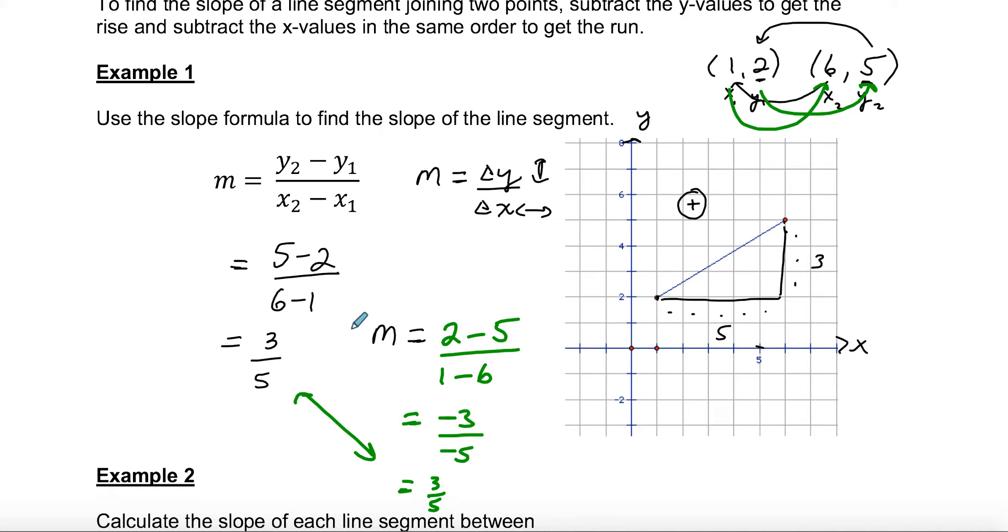As long as what you're doing, you go in the same direction. If you did 5 minus 2, and you were going from this point to this point, and then you messed up, and you went from the first point to the second point and did 1 minus 6, that's going to be a problem. You're not going to get the same answer. You'd get 3 over negative 5, so you'd get negative 3 fifths. You'd actually get the answer wrong. So as long as you go the same direction for both y and x, you're going to be fine.